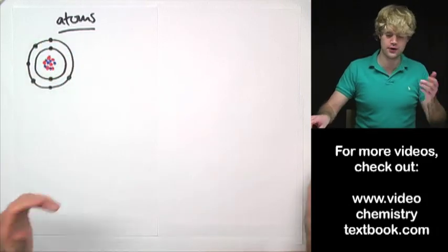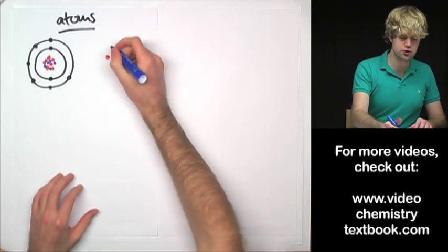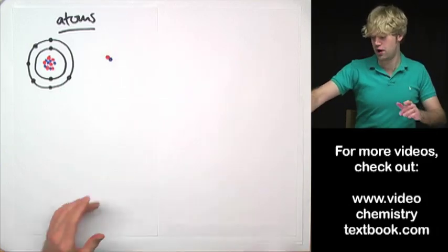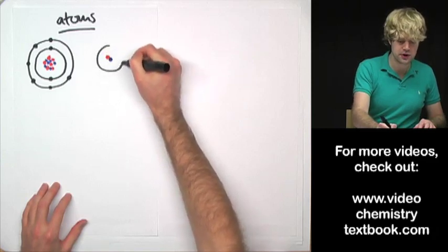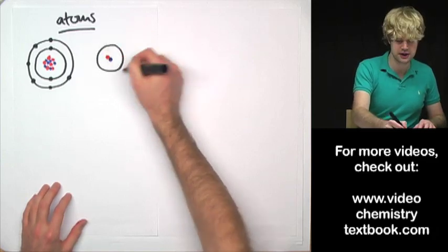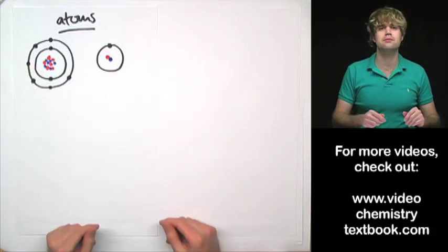Okay, so here's one atom. Let me draw another atom. Here's a proton. Here's a neutron. This atom is only going to have one proton. And then around the nucleus, here's an electron. Here's an energy level where one electron lives. Okay, so two atoms here.